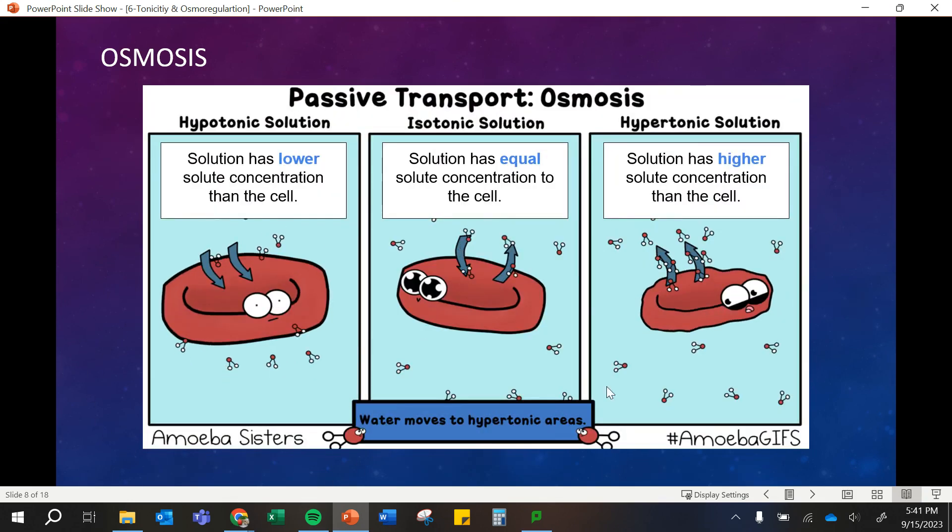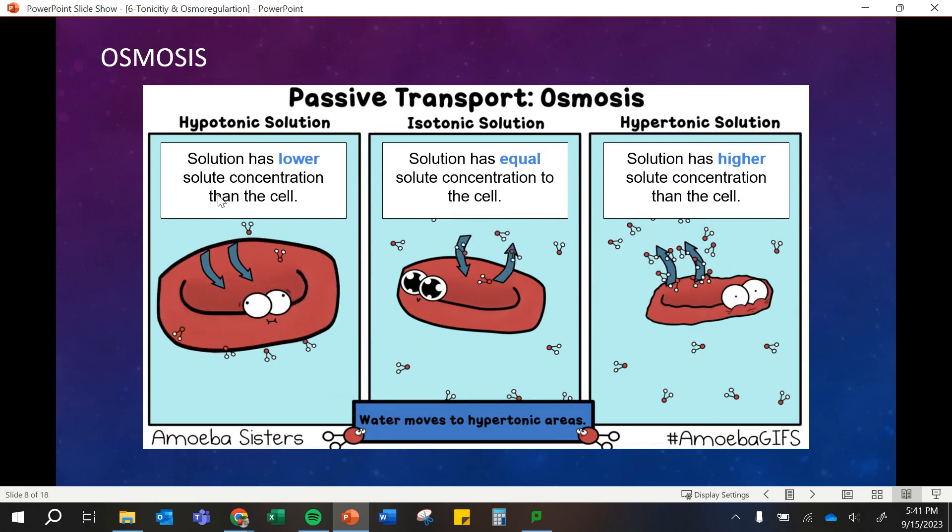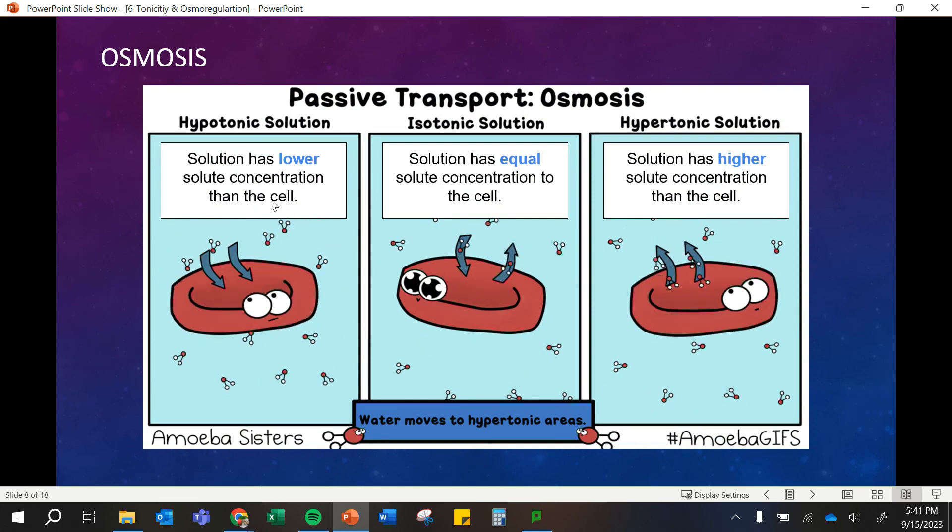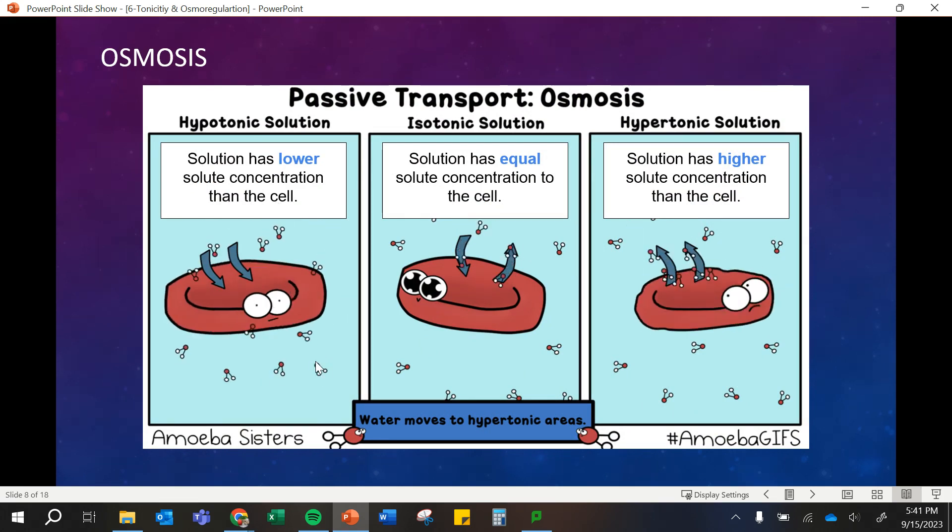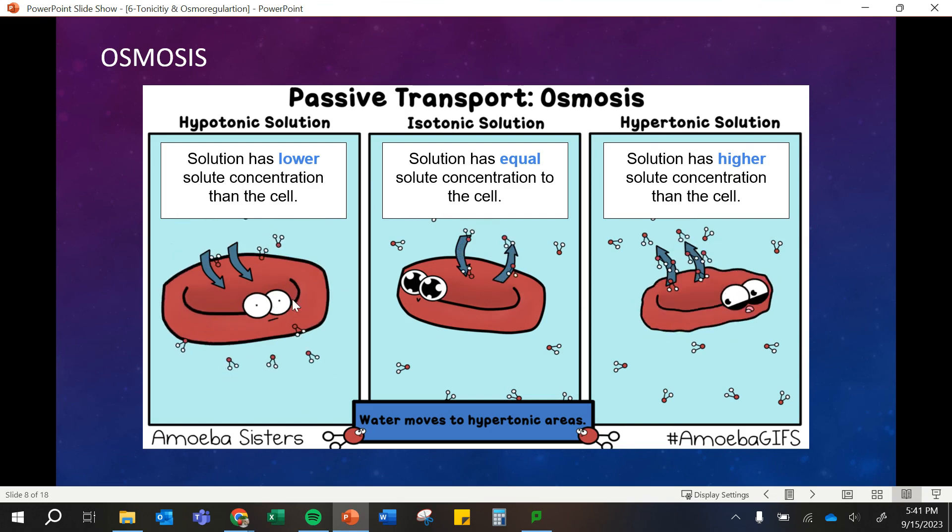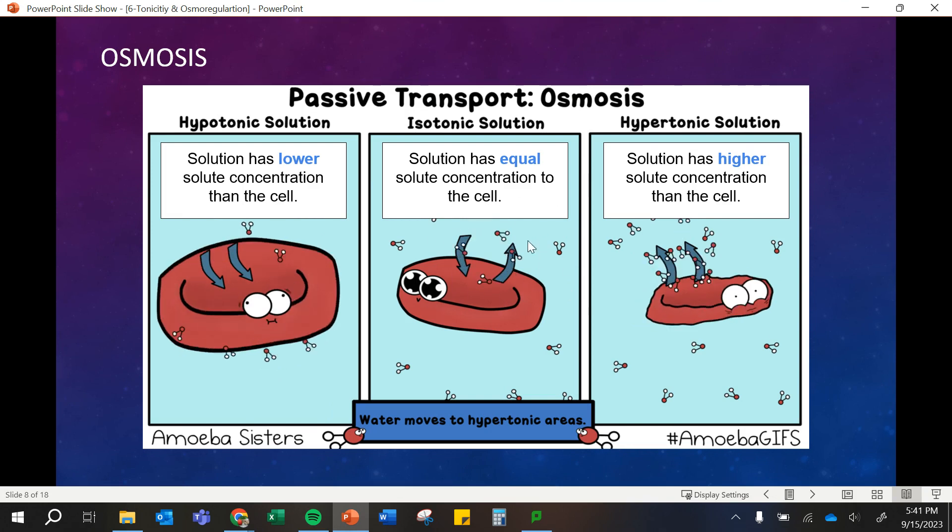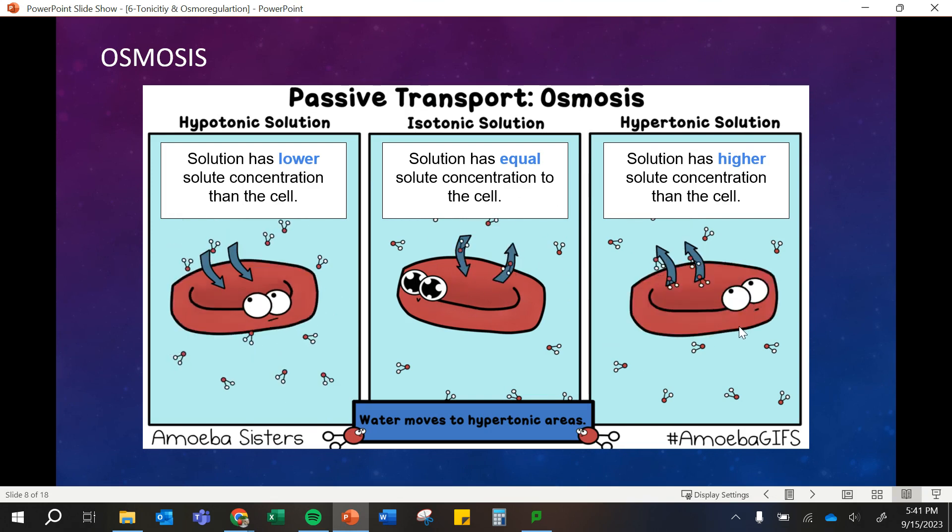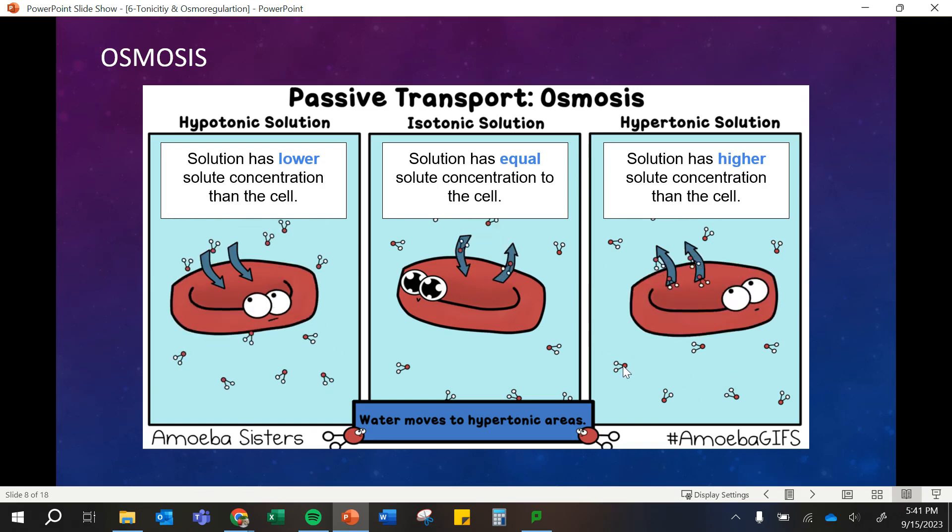So here's some things that are symbolizing this. So solution has lower solute concentration than the cell, so that means the water will move to dilute inside the cell, making it swell. Isotonic, it's nice and happy. Equal, it will still be moving. It's dynamic. And then hypertonic, there's a higher concentration in the solution, so the water will move out to dilute that as well.